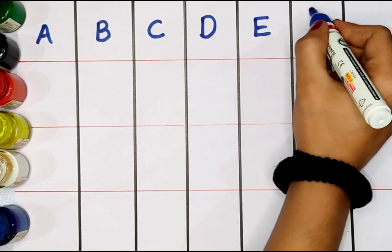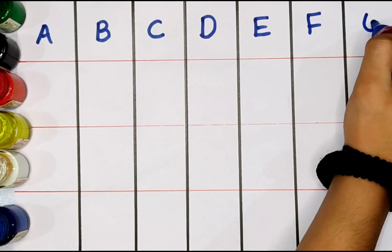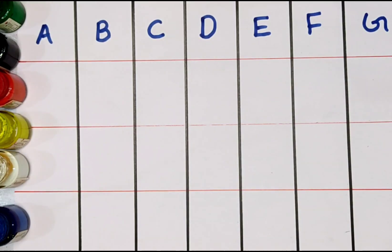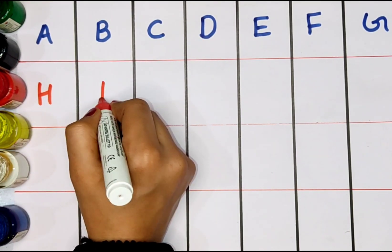E. E for elephant. F. F for fish. G. G for grabs. H. H for horse.